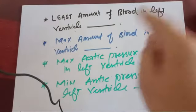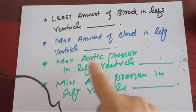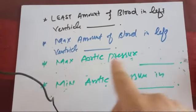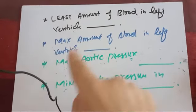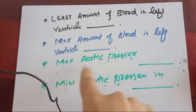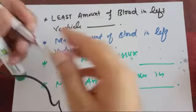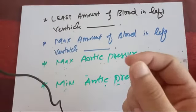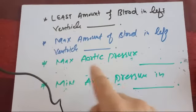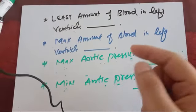The least amount of blood in the left ventricle is present during isovolumetric relaxation. Now there is another trick: maximum aortic pressure in the left ventricle is present during the slow ejection phase. Common sense says it should be the rapid ejection phase that causes maximum aortic pressure, but that is not the right answer.